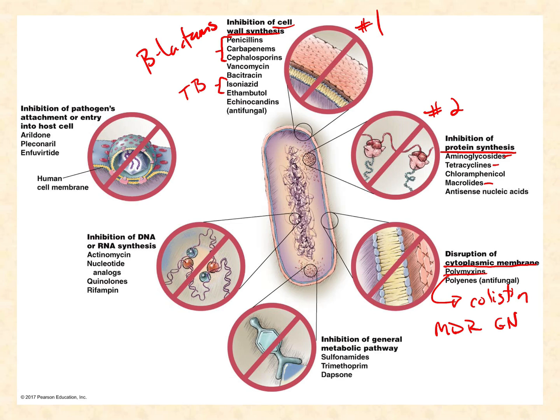Vancomycin, up in the cell wall synthesis category, is our drug of last resort for multi-drug resistant gram positives. Vancomycin is only good against gram positives - a very narrow range of bacteria - and is also highly toxic to the patient, causing renal toxicity and ototoxicity, meaning you can lose your hearing. We really don't want to go to vancomycin or colistin if we don't have to, and the spread of drug resistance forcing us to use these harsh drugs is one of the biggest problems we face.